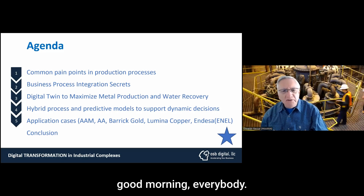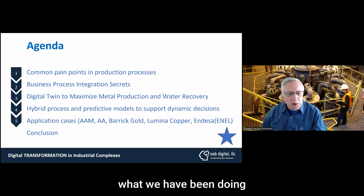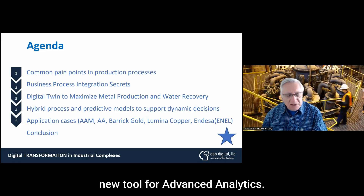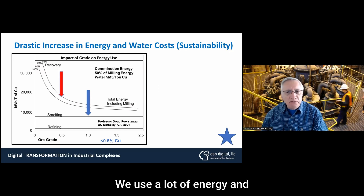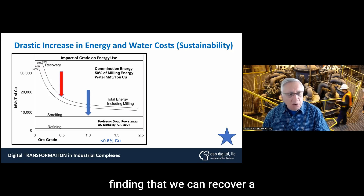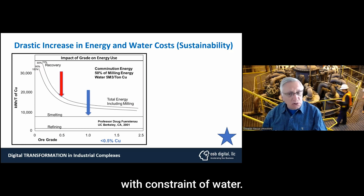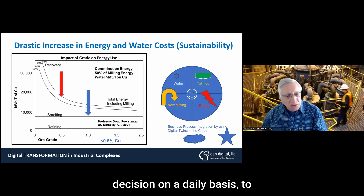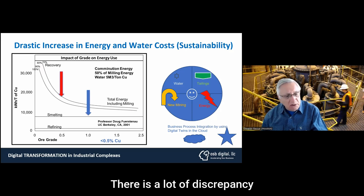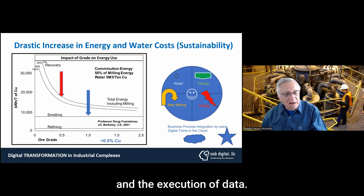Thank you, Clemence. Good morning, everybody. I'm very glad to share what we have been doing over the last couple of years. We have been helping customers with their PI systems and new tools for advanced analytics. The major problem we see in the mining industry is that we are dealing with very low-grade ore, producing very large volumes of rocks that go through a plant. We use a lot of energy and need to duplicate or even triplicate the amount of water produced. We are finding that we can recover a lot more water and definitely augment the production. Some plants have not been able to produce everything because they have been constrained by water. We need to change the business processes, how we operate the plants, how we use the data in different layers on a daily basis to do the best planning possible. There is a lot of discrepancy between the variances and the execution of data.